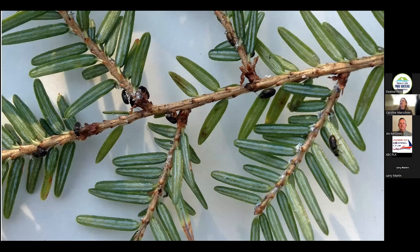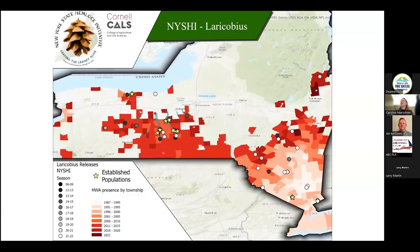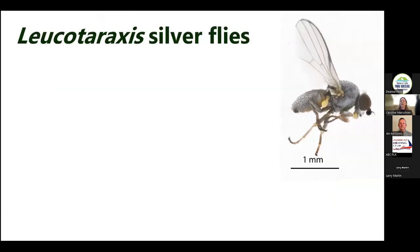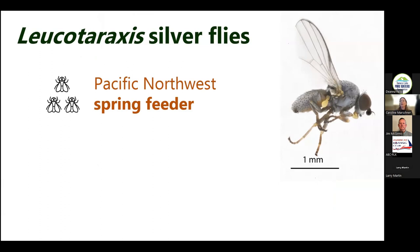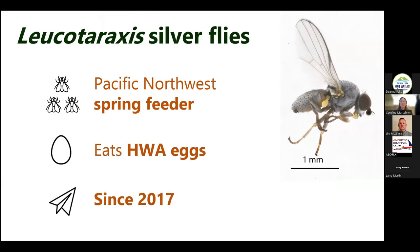That's what they look like on a twig eating HWA — they're very small but their food is even smaller. These are the release sites in New York. I'd like to focus your attention on Seneca Lake where the stars indicate places where we have established copious beetles — so your watershed has these beetles out there in the landscape eating HWA, which is awesome. The other class of insects we work with are silverflies, also from the Pacific Northwest. They feed on the spring generation of HWA, mostly the eggs, and we've been working with these since about 2017.